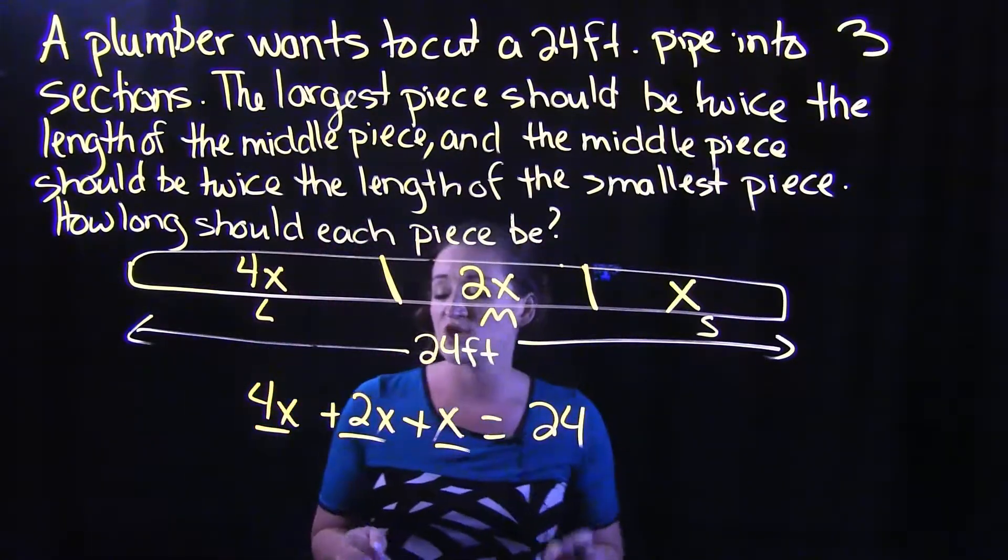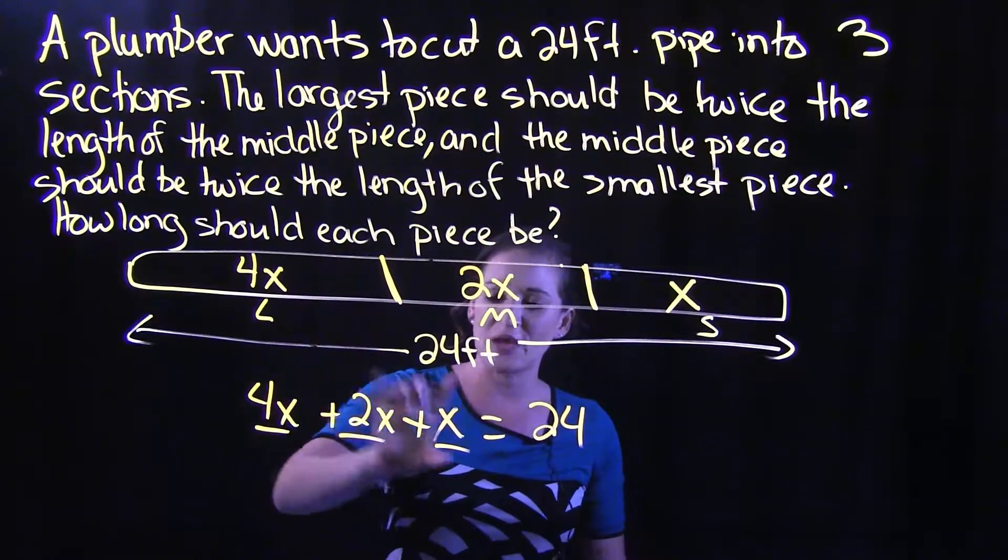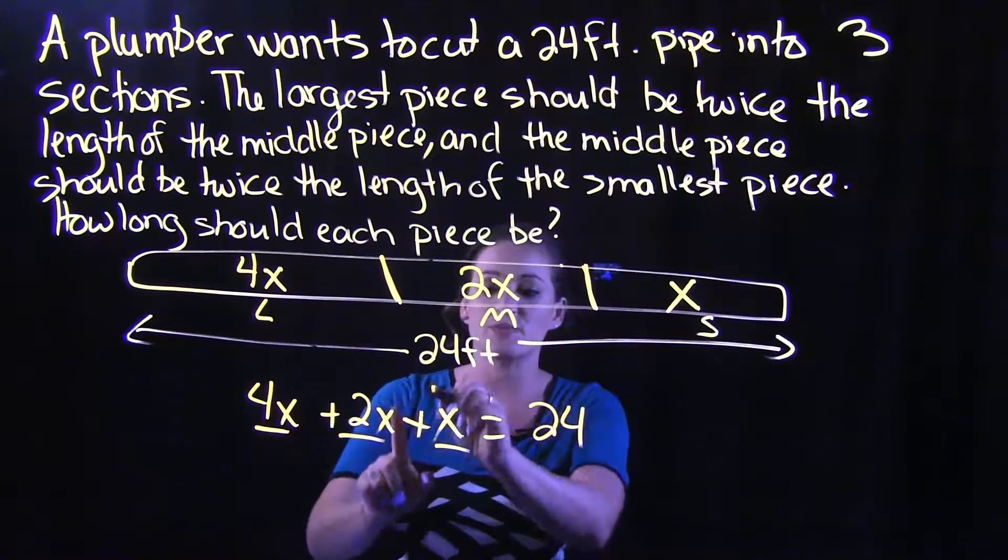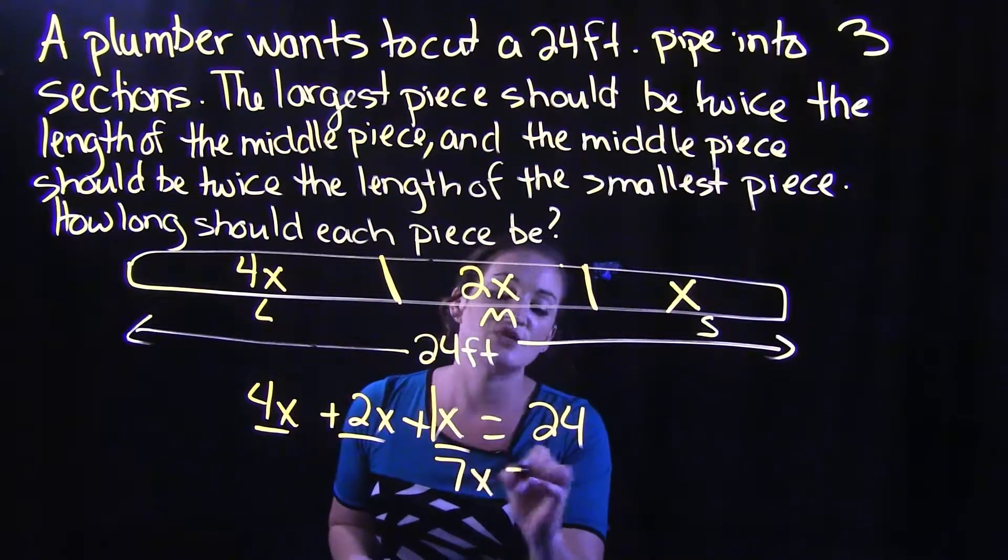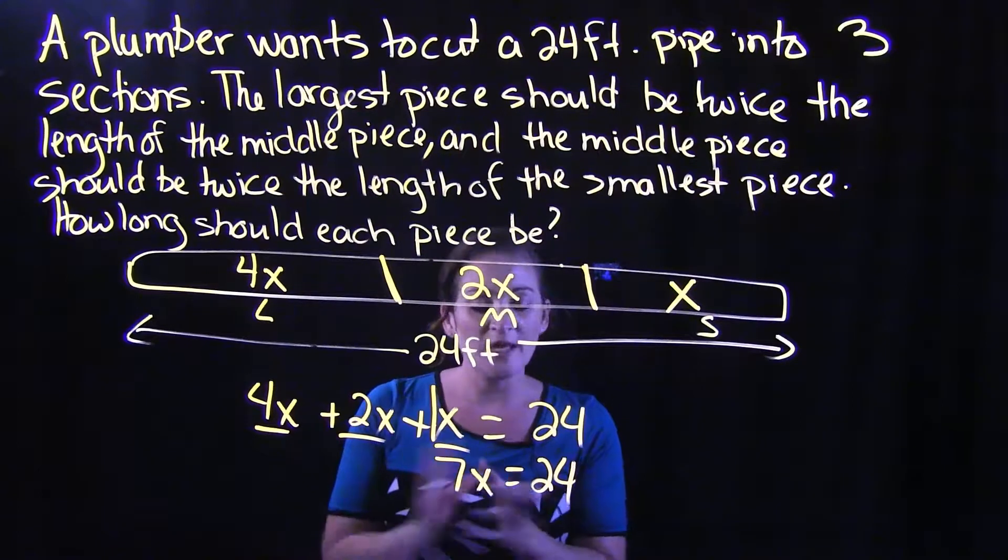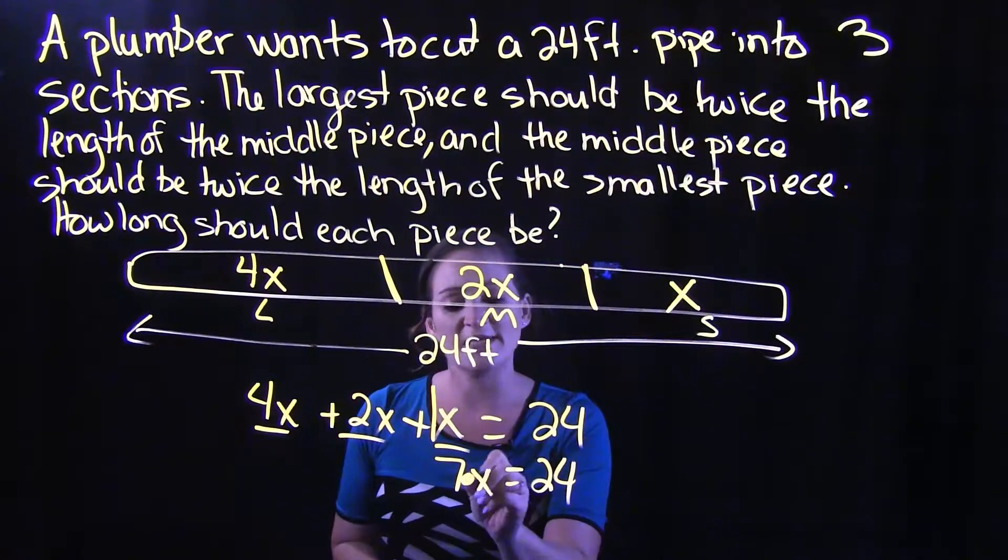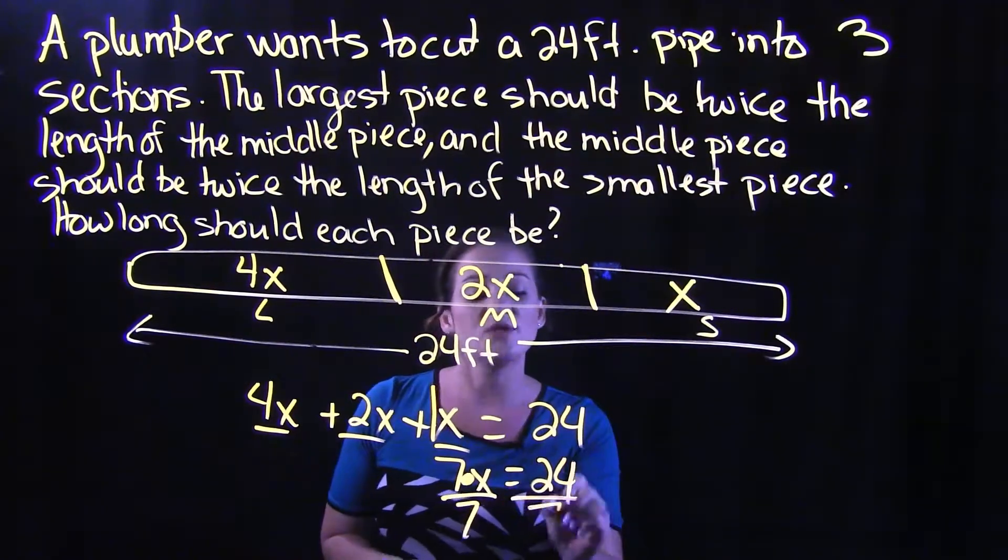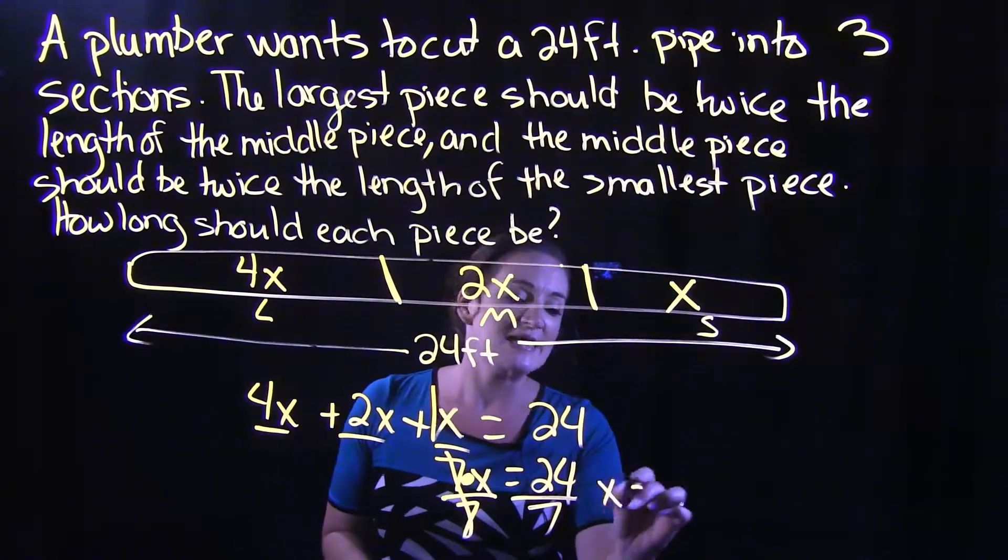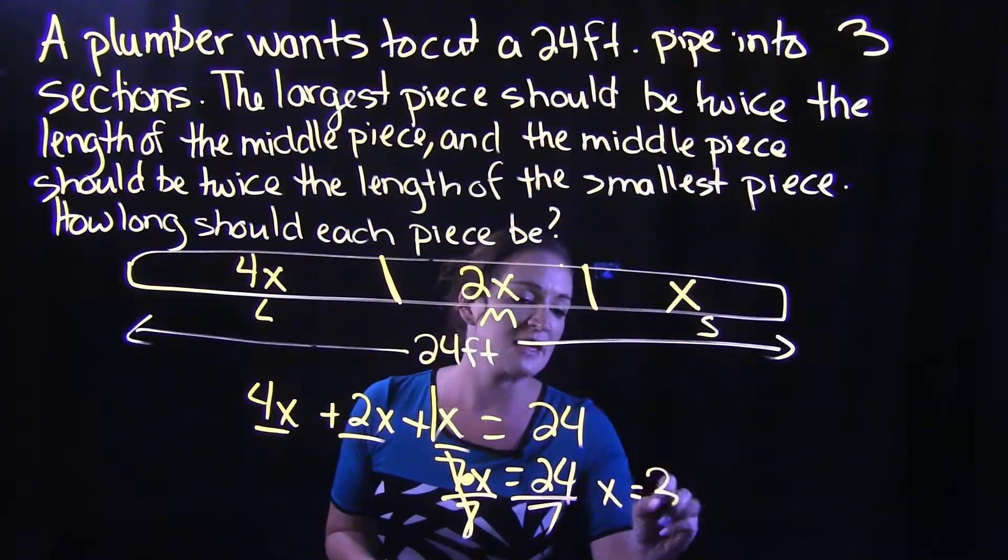So if we solve this equation, we need to start by combining like terms, 4X plus 2X plus 1X. So 4 plus 2 is 6, 6 plus 1 is 7. So I get that 7X is equal to 24. Then since it's 7X, that is 7 times X, we do the opposite and divide both sides by 7. And we get that X is equal to approximately 3.4.